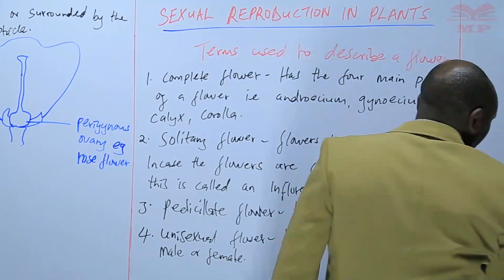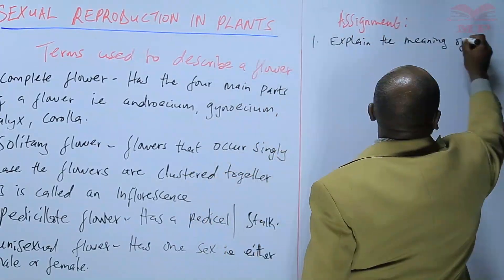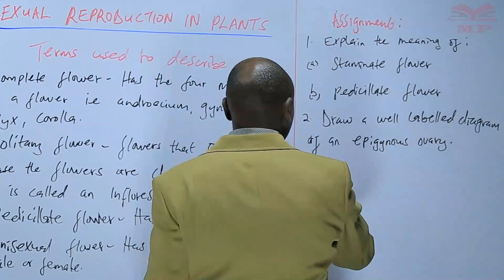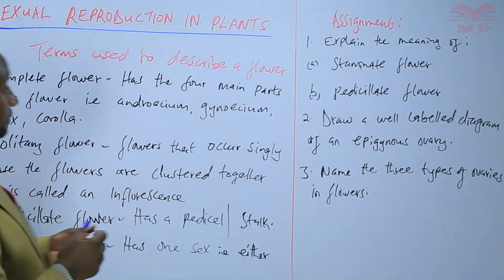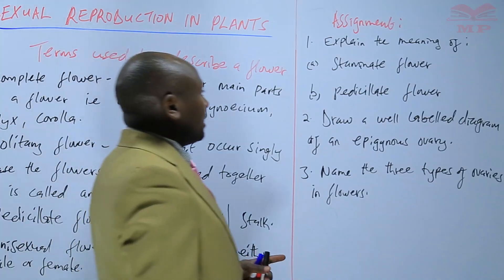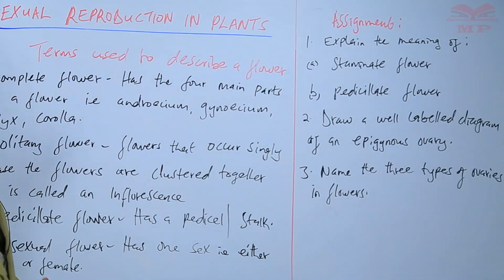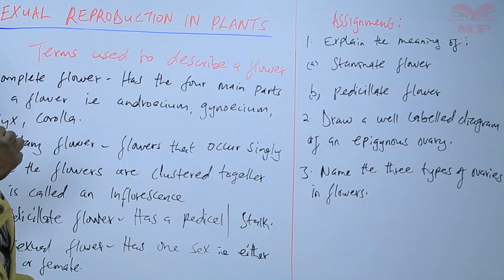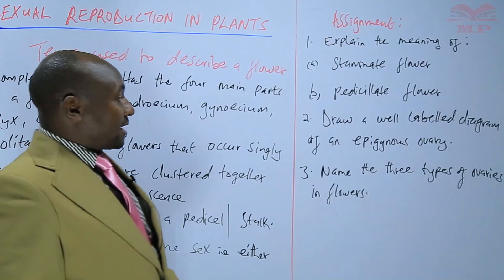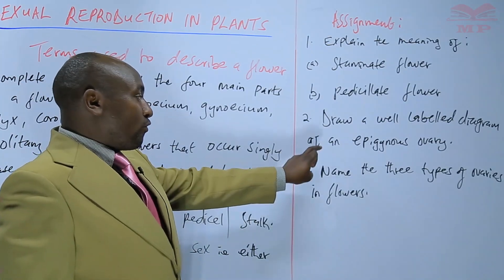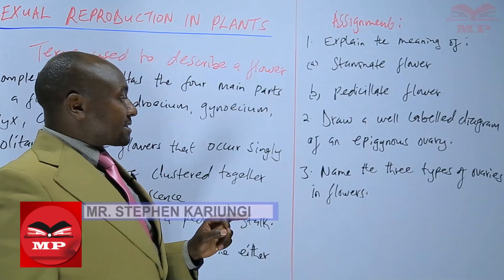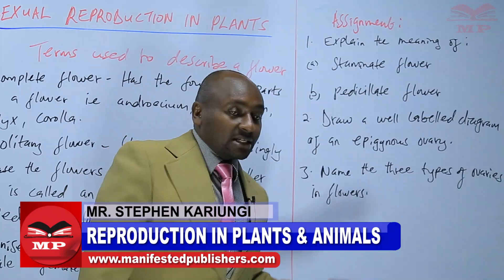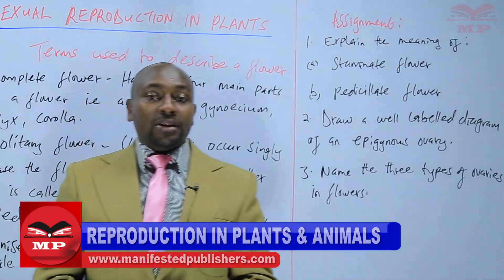Our today's assignment: Question one, explain the meaning of A) staminate flower and B) pedicellate flower. Number two, draw a well-labeled diagram of an epigynous ovary. And lastly, number three, name the three types of ovaries observed in flowers. We are going to stop there. Until next time, goodbye.